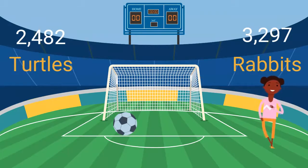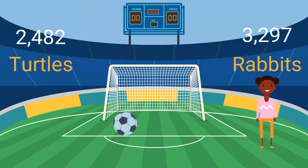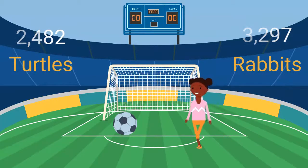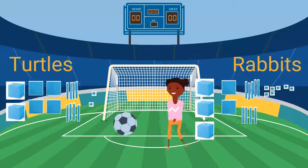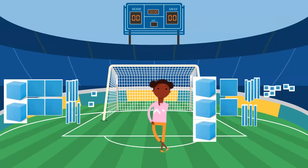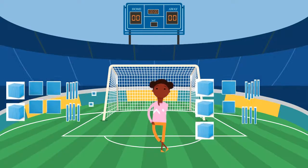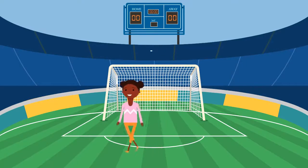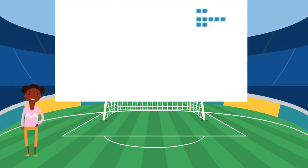I will represent the numbers rooting for each side with my blocks. There are a lot of fans. I will combine my ones cubes. Two ones plus seven ones is nine ones.